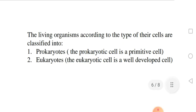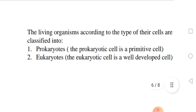Living organisms, according to the type of their cells, are classified into prokaryotes — whose prokaryotic cell is a primitive cell — and eukaryotes — whose eukaryotic cell is a well-developed cell.